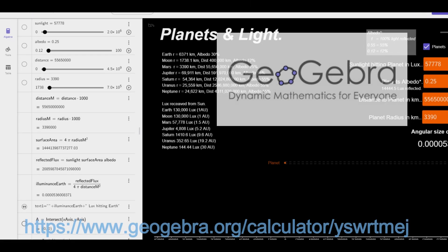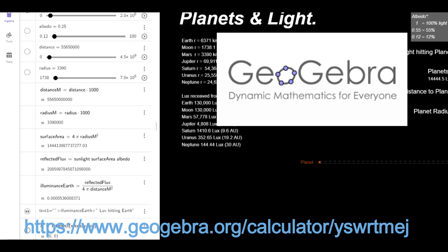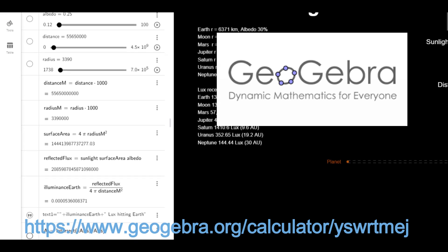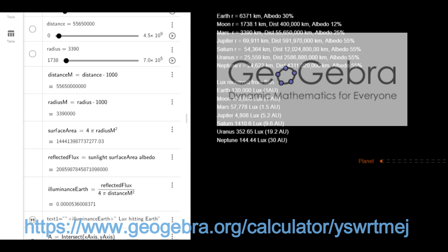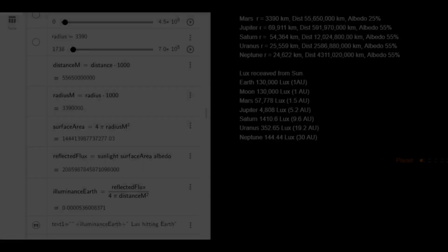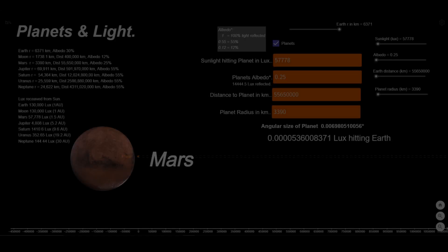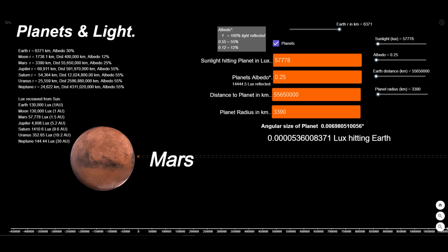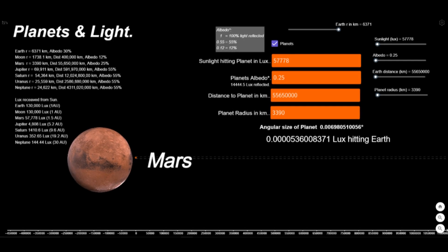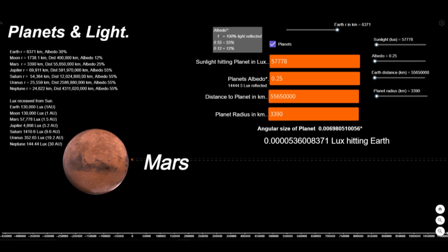We are using GeoGebra to input the math and numbers to produce an interactive calculator. Let's start with Mars. At its stated distance, this is the amount of light hitting the Earth's outer atmosphere.